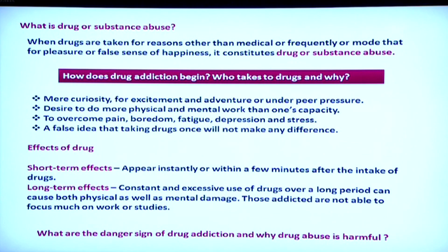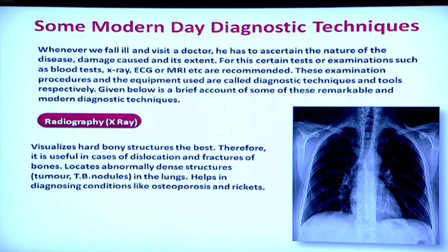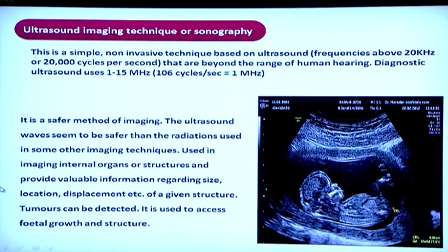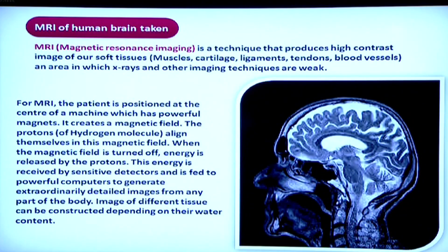Our last topic is some of the diagnostic techniques that help us detect certain diseases. X-rays help us detect defects in hard tissues like bones and cartilages. Next is ultrasound — using ultrasonic waves as a non-invasive method that does not harm patients; its best use is to monitor fetal growth in the mother's womb. The last technique is MRI — magnetic resonance imaging — which helps study soft tissues in our body and detect any malformation or malfunctioning. The picture shows what an MRI of the brain looks like.